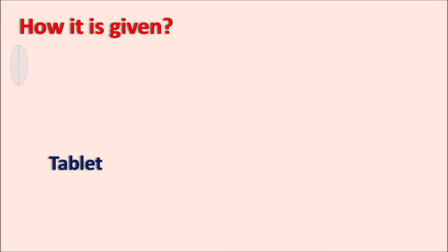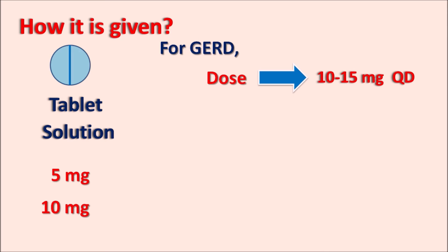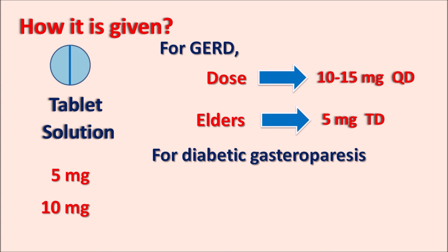Metoclopramide is available as a tablet and a solution, also as an IV injection. As a tablet it is available at doses of 5 mg and 10 mg. For the treatment of GERD, the drug can be used continuously or intermittently. For continuous use, the dose is initiated at 10 to 15 mg four times daily (QID), giving a maximum dose of 60 mg per day. In elderly patients, the dose should be reduced to 5 mg three times daily.